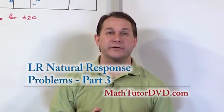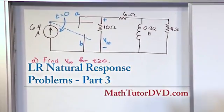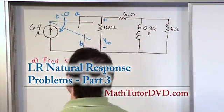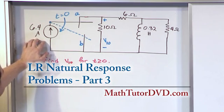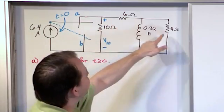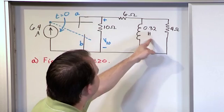Hello. Welcome to this lesson of the circuit analysis tutor. Here we're going to tackle this circuit on the board, which is a little bit different than the ones we've covered before. What we have is a 6.4 amp current source going up. We have a couple of resistors, actually three resistors, on the right-hand side with an inductor in the middle, 0.32 Henry.